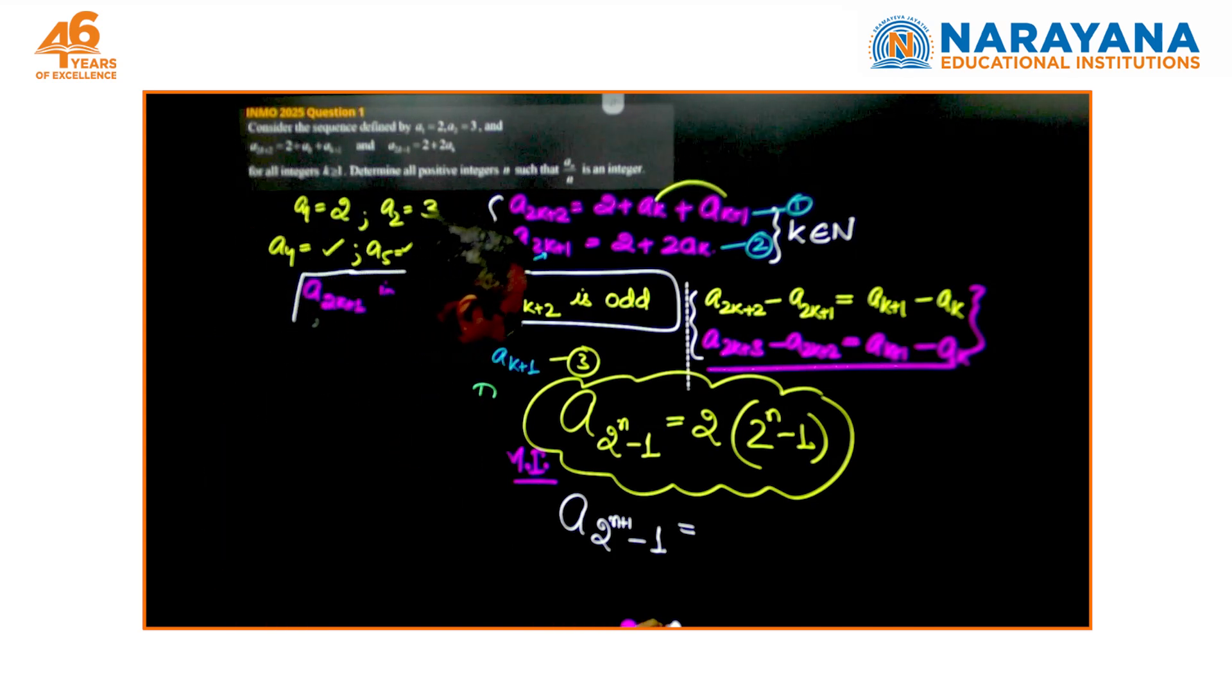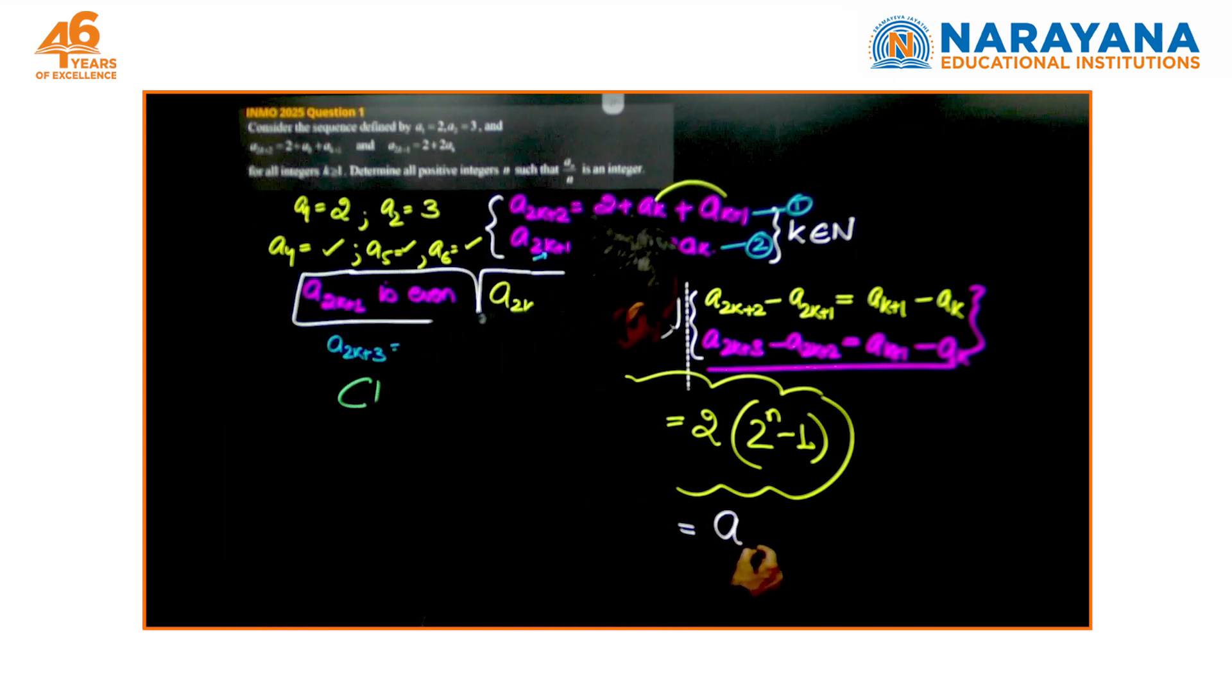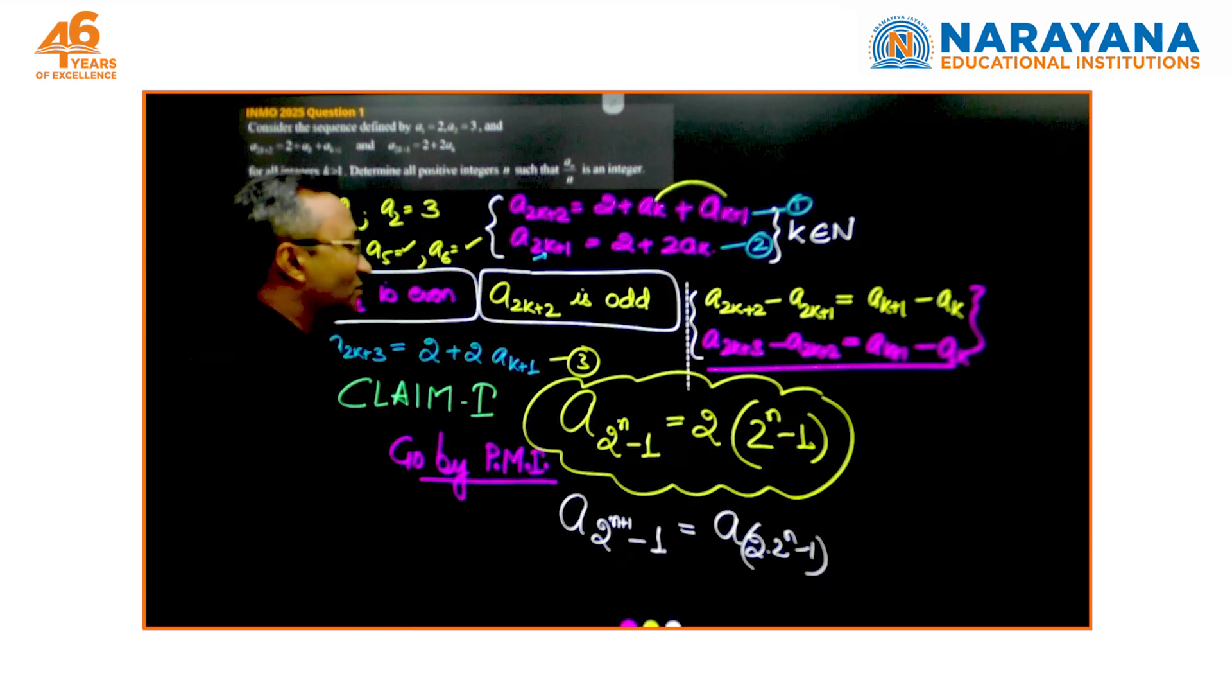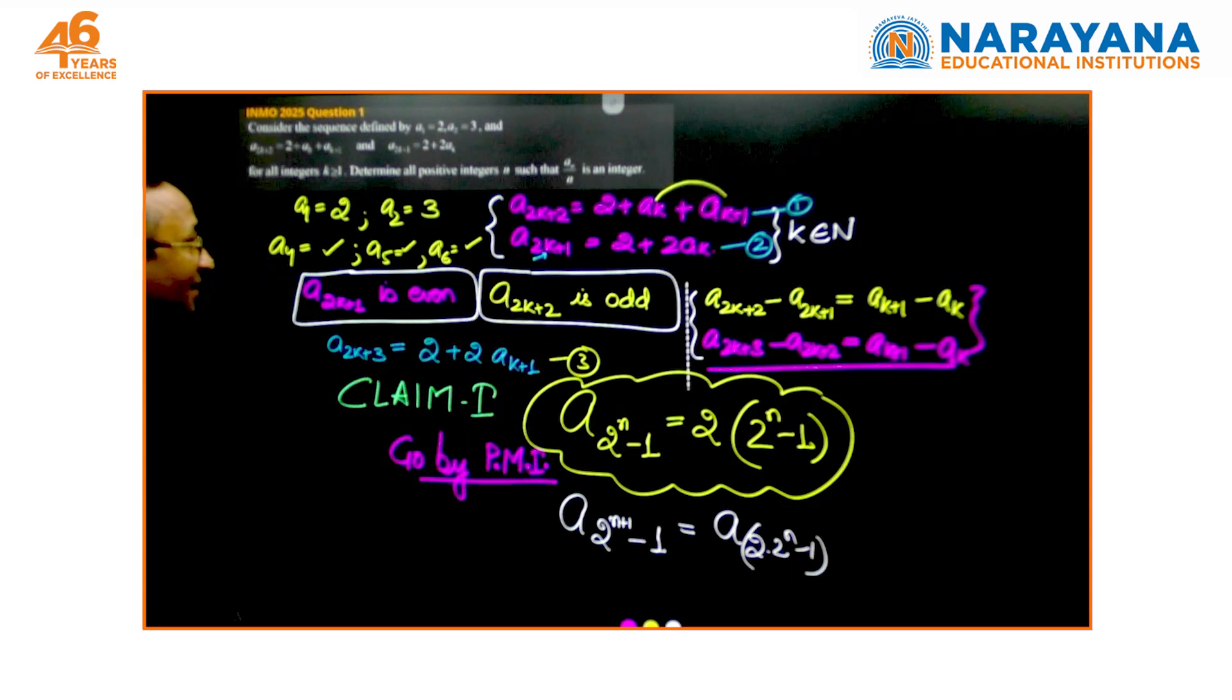So a_{2^(n+1) - 1} should ideally be equal to 2 times 2^(n+1) minus 1. Now, for this to be true you will write this as a_{2 times 2^n - 1} and based on these results you very quickly realize that this is done.